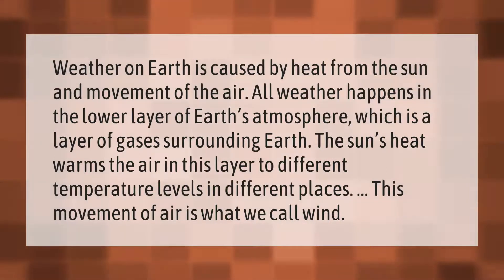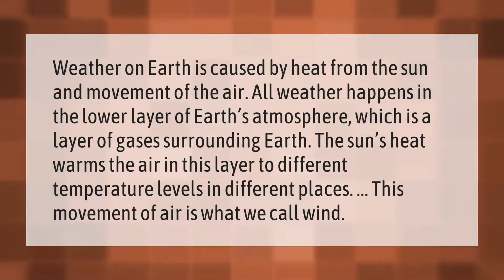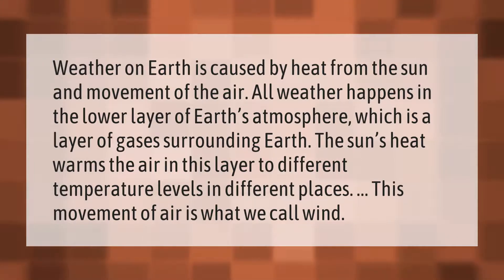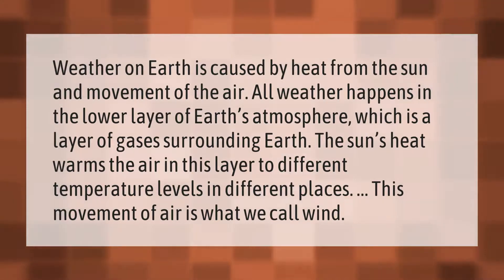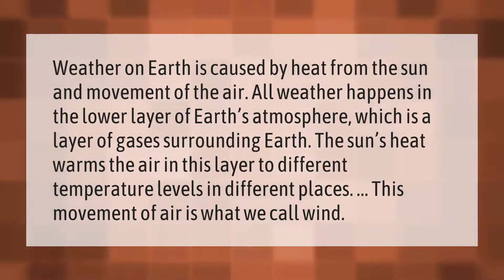Weather on earth is caused by heat from the sun and movement of the air. All weather happens in the lower layer of earth's atmosphere, which is a layer of gases surrounding earth. The sun's heat warms the air in this layer to different temperature levels in different places. This movement of air is what we call wind.